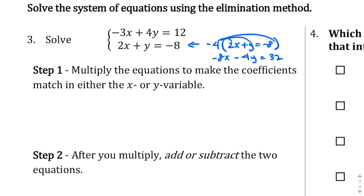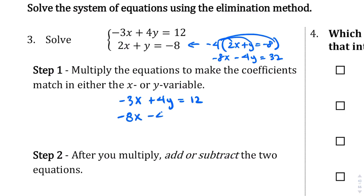So those are going to be my two equations: negative 3x plus 4y equals 12 for the top equation, and the bottom equation is going to be negative 8x minus 4y equals 32. So those are the two equations that I'm working with.